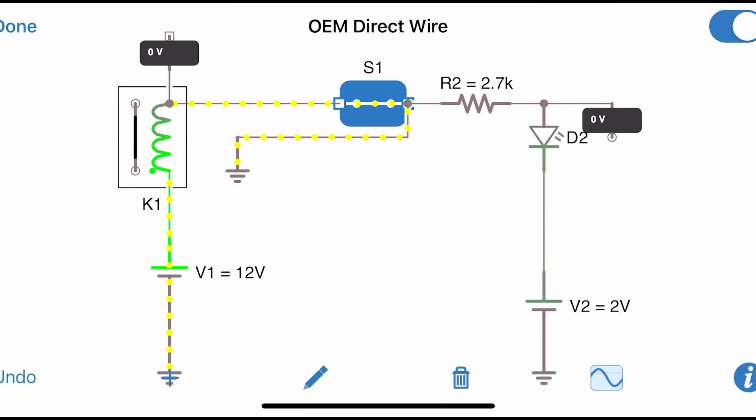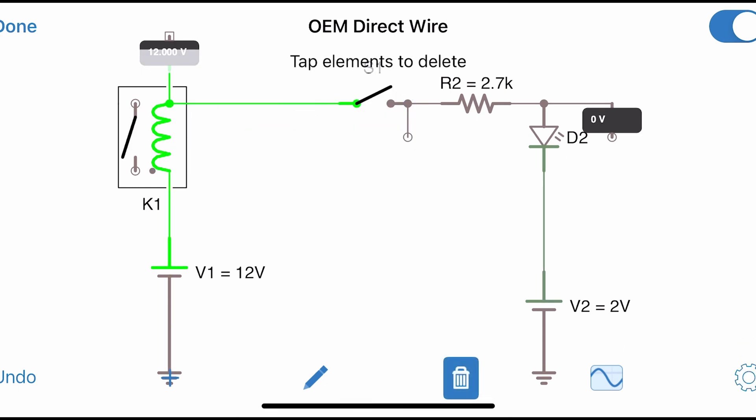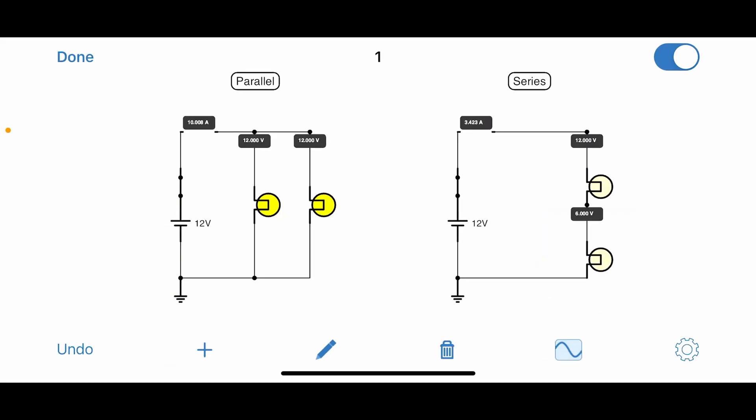Now notice the difference, is that these are actually in series. If we were to remove this ground here, and try to bypass it, these elements are now in series. So we have the relay, and then we have, if we remove the ground there, we try to force current through the resistor diode combo, but notice the voltage. And therein lies the problem.